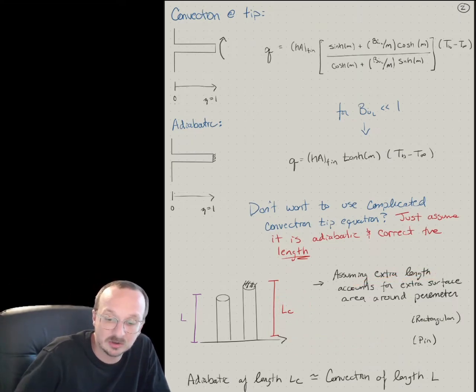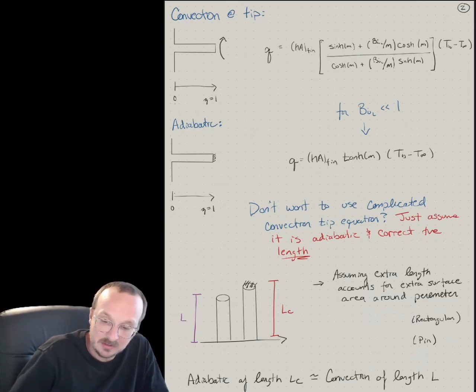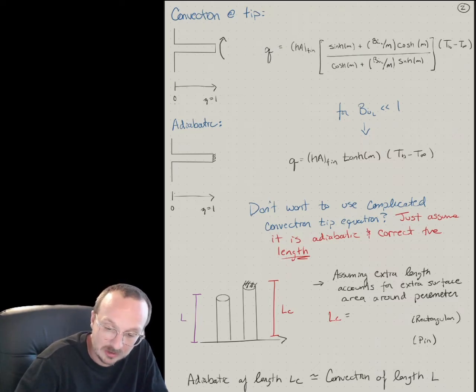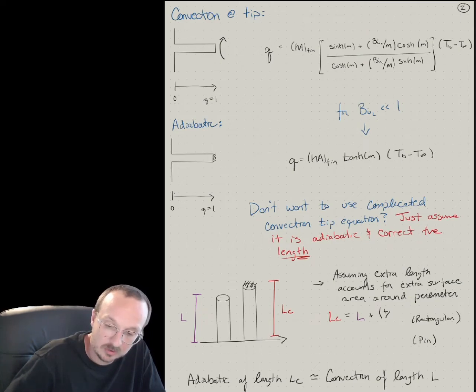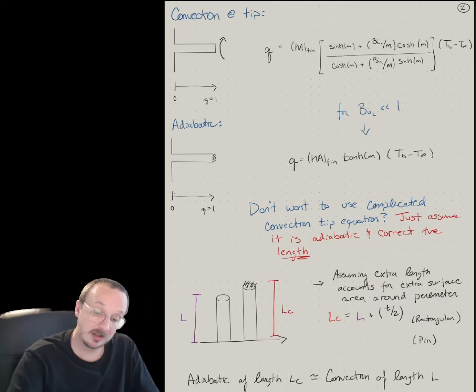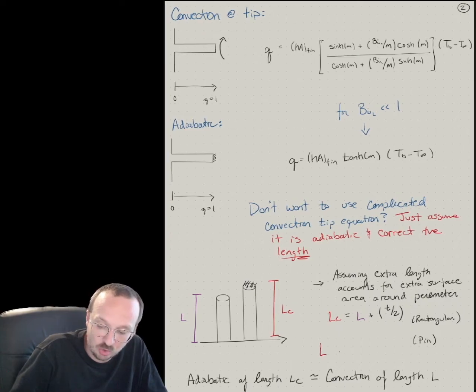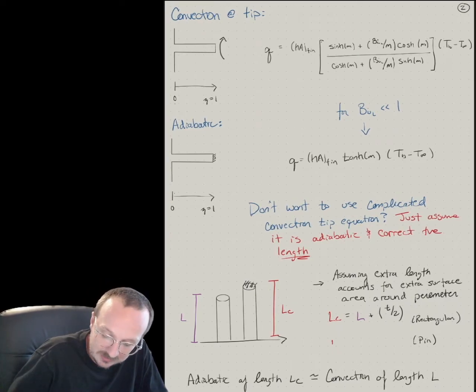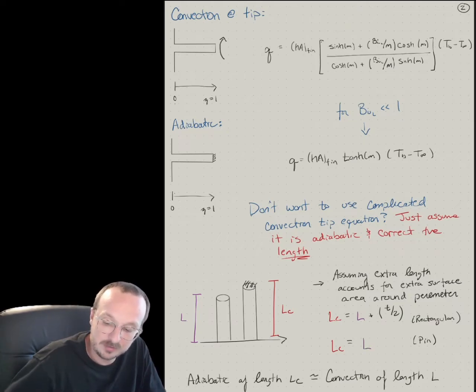And so for a rectangular fin, the corrected area LC is going to be equal to the actual length L plus the thickness over two. So this is just a good approximation. If you're talking about a pin fin, your corrected length is going to equal the actual length L plus the diameter divided by four.